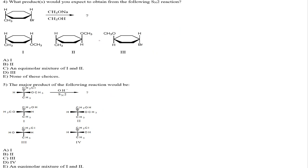Now we have to find the product for this SN2 reaction. Since it's SN2, if there's a chiral center, I have to do an inversion. For SN1, I'd get a racemic mixture — both R and S configurations. But we're dealing with SN2, so no racemic mixture. Answer choice C is racemic, which corresponds to SN1. C is incorrect.